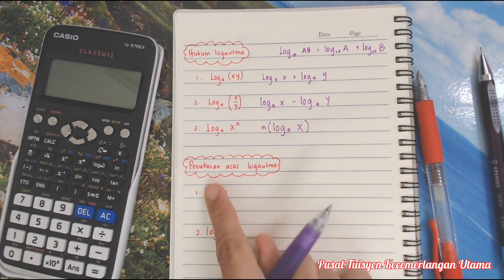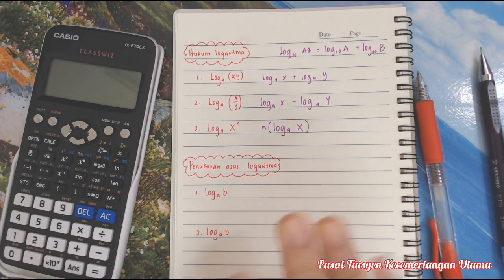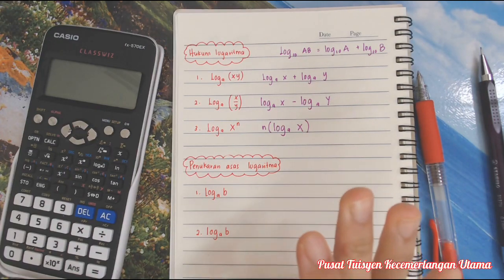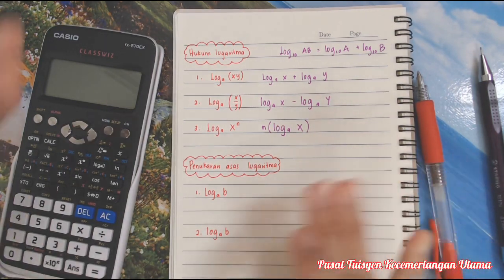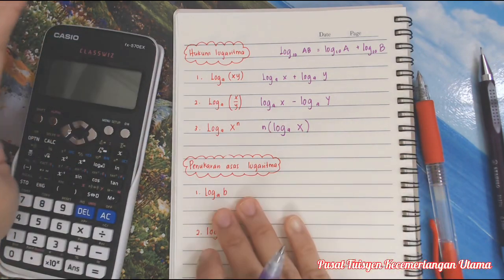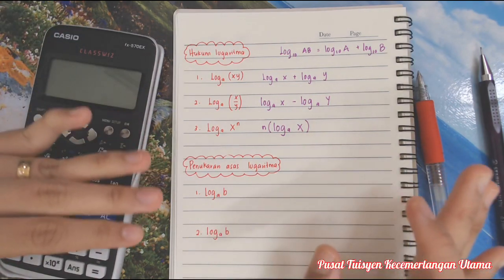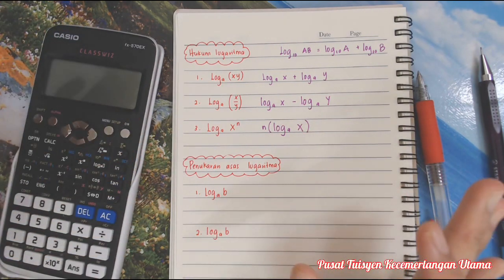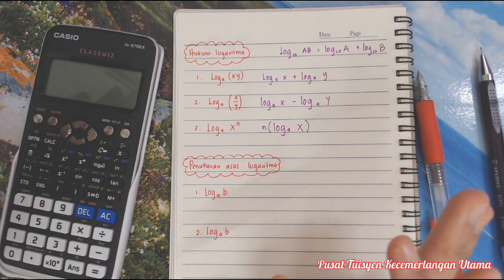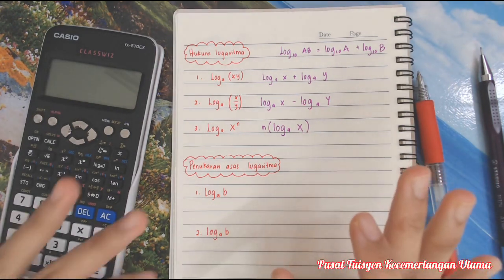Next adalah penukaran asas logarithma. Macam mana kita nak tukar asas? Contohnya asas dia kejap asas 10, kejap asas 5. Awak nak samakan asas je supaya awak boleh selesaikan. Inilah cara dia.